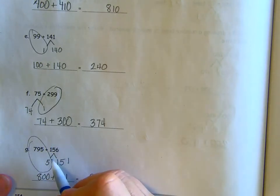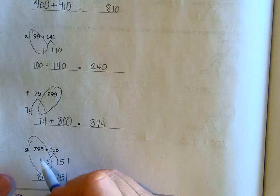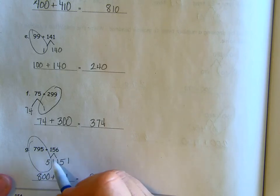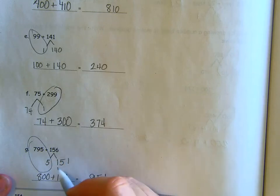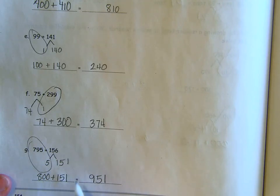And finally, with 795, we need five more to make 800. Going to just take it from 156. That would leave us with 151. So our new problem is 800 plus 151 equals 951.